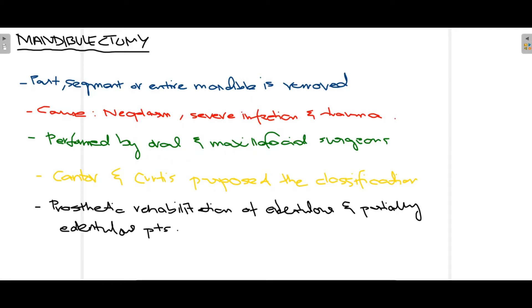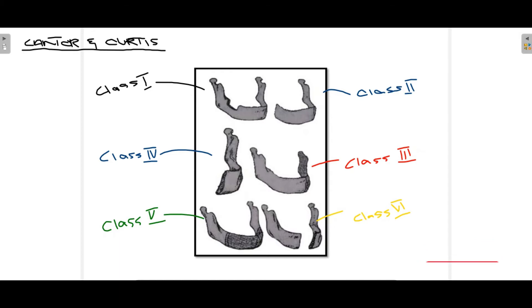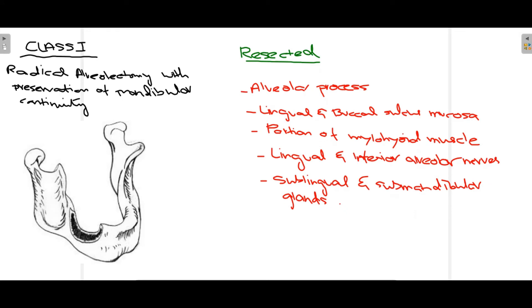These mandibulectomy procedures are most commonly performed by oral and maxillofacial surgeons. The classification system used was suggested by Canter and Curtis, and it is most commonly used in prosthetic rehabilitation of edentulous and partially edentulous patients. There are basically six classes in this classification, each representing a different variation depending on the pathology present in the mandible.